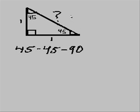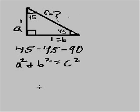We could solve this with the Pythagorean theorem: a squared plus b squared equals c squared. How do we figure that out? Let's replace the a with a one and the b with a one. So now we have one squared plus one squared equals c squared.